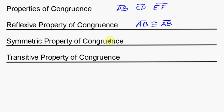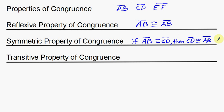The symmetric property of congruence is a little different. Using an if-then statement: if segment AB is congruent to segment CD, then segment CD is also congruent to segment AB. Everything gets flip-flopped. That's what the symmetric property is — we're using the congruency symbol instead of the equality symbol.